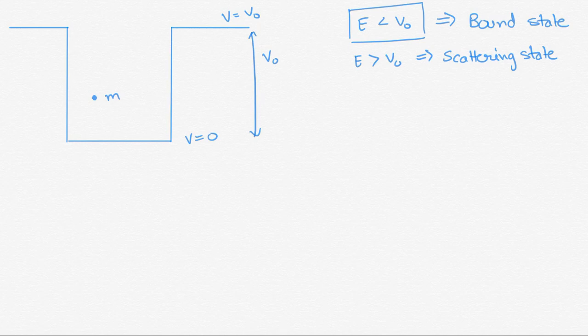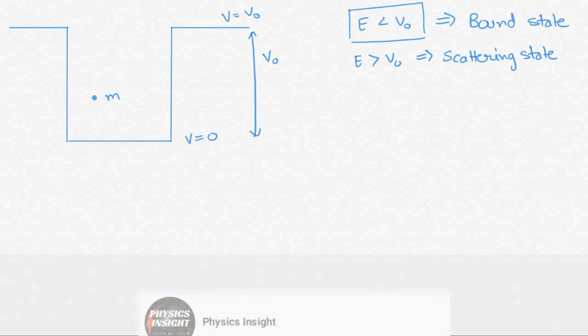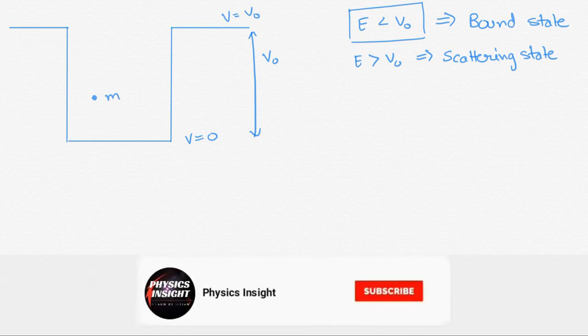If the energy of the particle is less than V₀, then classically this particle cannot penetrate the box walls. However, quantum mechanically, due to the wave nature of the moving particle, there is a finite probability that the particle will penetrate the box up to a significant distance.